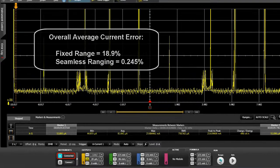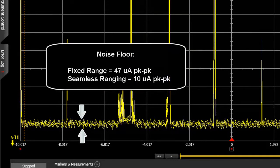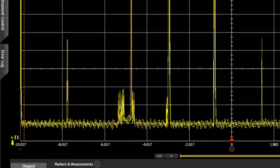This is because the noise floor decreased from 47 μA to 10 μA peak to peak. This gives you much greater insight into the power saving operation of the sensor.